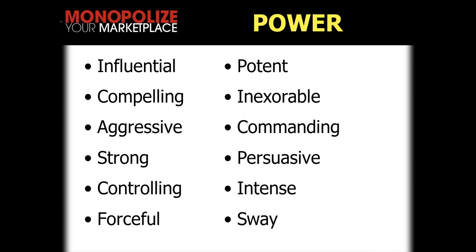The power evaluation words are: influential, compelling, aggressive, strong, controlling, forceful, potent, inexorable, commanding, persuasive, intense, sway. We want to make sure this is the feeling coming through. Not every single thing you write needs massive power all the time, but we want to start with our three Ps in our headlines and sub-headlines. As we get into the text and copy, there doesn't necessarily need to be a high level of power every sentence, but we do want to make sure we are talking strong. Specificity, which is under precision, is going to be highly important even as we get into the text part.